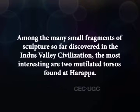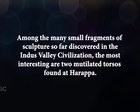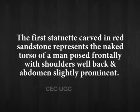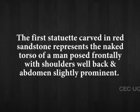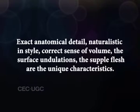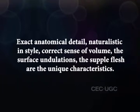Among the many small fragments of sculpture so far discovered in the Indus Valley civilization, the most interesting are two mutilated torsos found at Harappa. The first statue, carved in red sandstone, represents the naked torso of a man posed frontally with shoulders well back and abdomen slightly prominent. Except for anatomical detail, it is naturalistic in style with a correct sense of volume, surface relations, and supple flesh as unique characteristics.